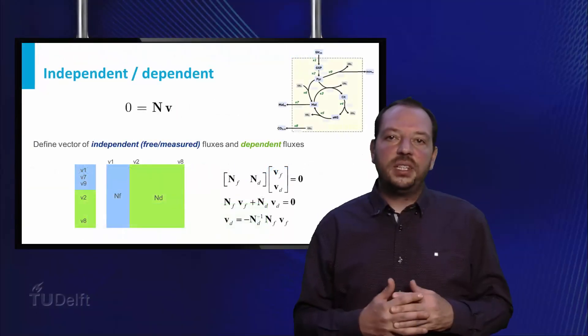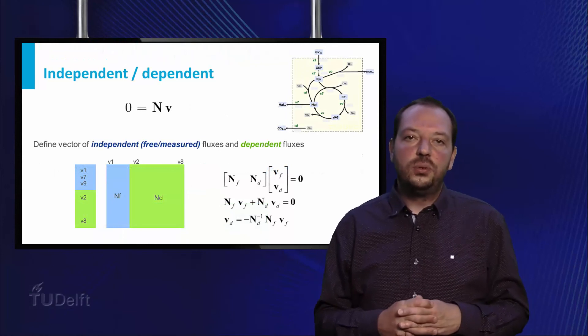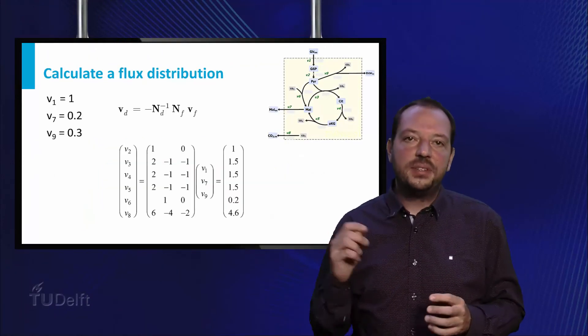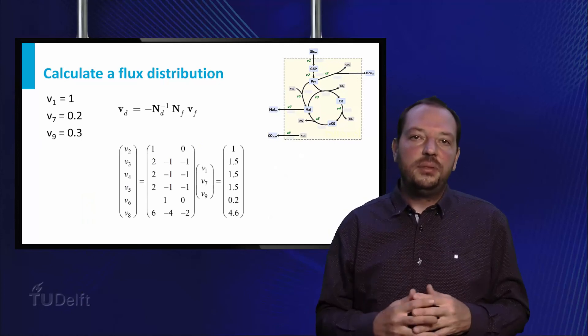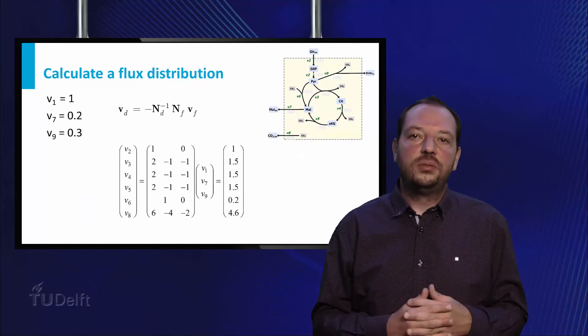So we can now calculate the unknowns from the knowns. With the measured values 1, 0.2, and 0.3 for V1, V7, and V9 respectively, we obtain the shown values for the unknowns.